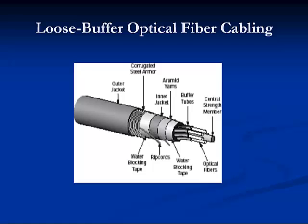A loose tube buffer is essentially a tough plastic pipe about an eighth of an inch in diameter. One or several coated fibers can be placed inside the tube, which is then filled with a protective substance — usually a water blocking gel — to provide cushioning, strength, and protection from the elements. Water block powders and tapes may also be used. A loose tube design is commonly used in outdoor installations, and multiple tubes can be placed in a cable to accommodate large fiber counts for high density communication areas such as large cities or long distance trunk lines.